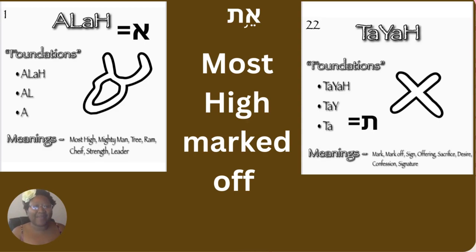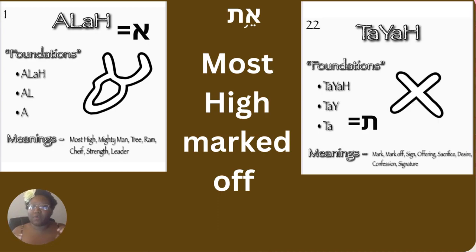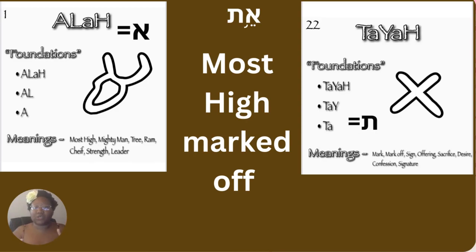The next word — 'Aliyah': most high. And then 'Taya,' the new one — it says mark, marked off, sign, offering, sacrifice, desire, and confession and signature. I said: the most high marked off.